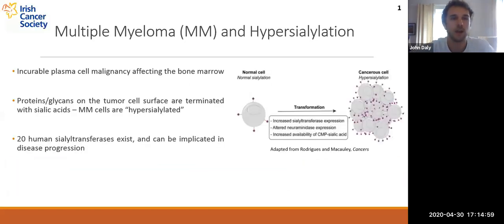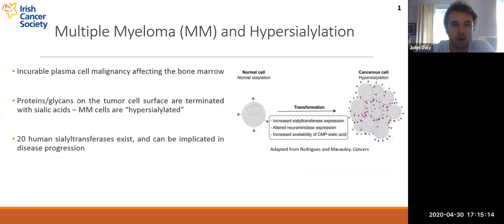Just a quick introduction for anyone who might not be aware: multiple myeloma is an incurable malignancy affecting plasma cells, and tumours form in the bone marrow. Often several of these tumours will form, leading to the term 'multiple' in multiple myeloma. Aberrant glycosylation is a hallmark of cancer, and this is particularly true in multiple myeloma, where proteins and glycans on the cell surface are terminated with sialic acids, due to the action of a family of human sialyltransferases, of which there are 20 members. A dense layer of sialic acids forms on the myeloma cancer cells, leading to them being termed hypersialylated.